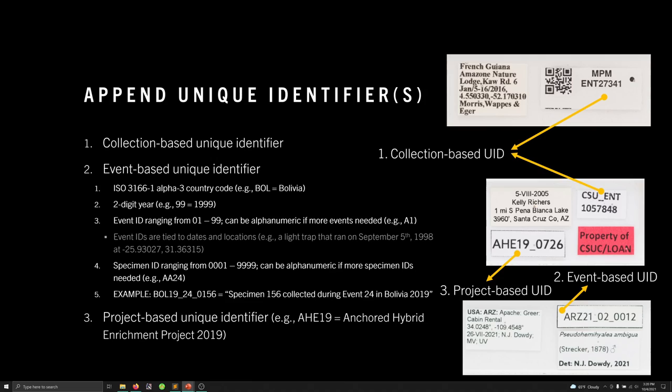My process really begins at appending unique identifiers, and I have three different classes. A given specimen may have all three types of these unique identifiers added, or they may only have one, depending on what I felt was necessary or what I had access to at the time, but they should have at least one.